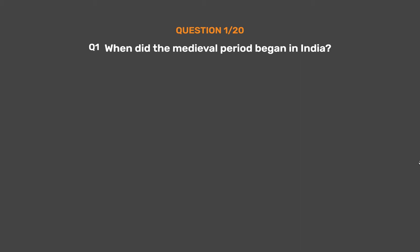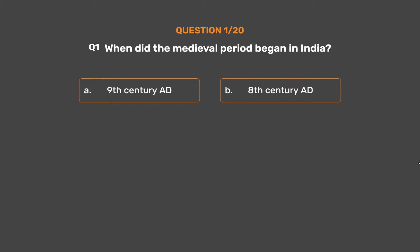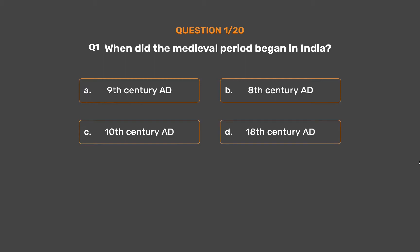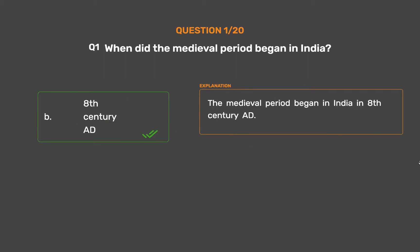Question 1: When did the medieval period begin in India? Option A: 9th century AD. Option B: 8th century AD. Option C: 10th century AD. Option D: 18th century AD. The correct answer is Option B: 8th century AD. The medieval period began in India in the 8th century AD.